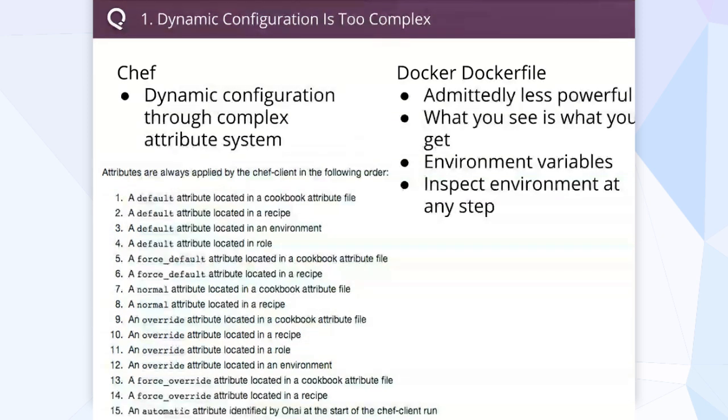Dockerfiles really encourage you to use environment variables for configuration — there are trends toward that with Heroku and others. Using environment variables has limitations, but it's explicit; you can always know what the value is. Especially with Docker, every step of a Dockerfile is cached as a separate image, and you can spin up a container at any point during the build process to see what the environment is, simulate commands, do whatever you need. It makes debugging build scripts very nice and not painful.